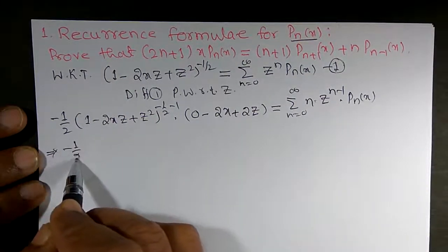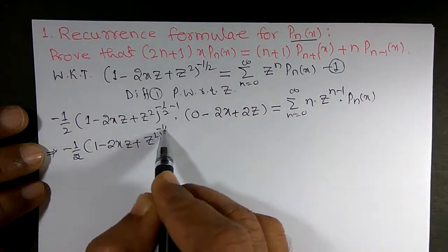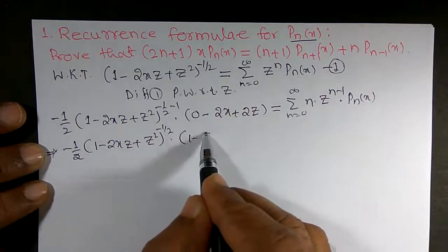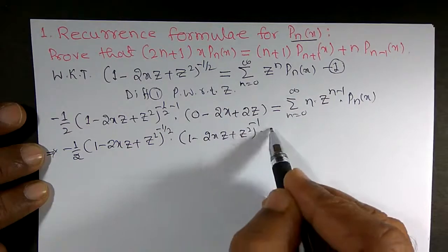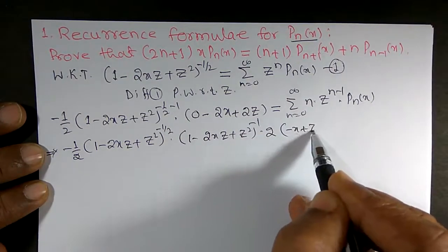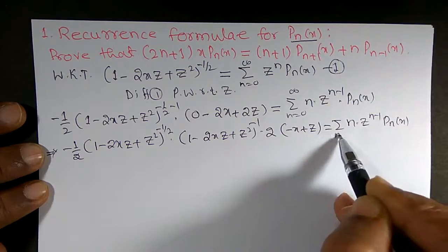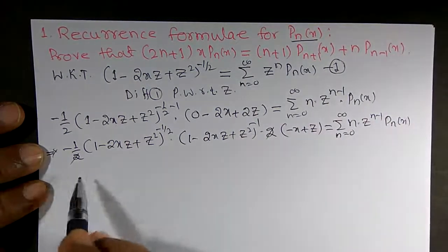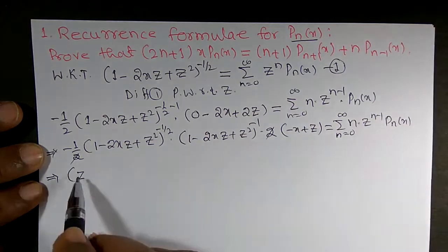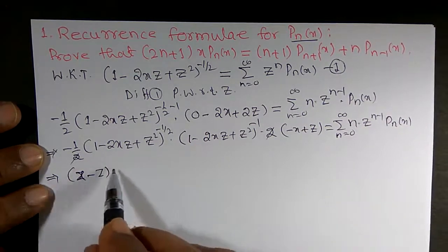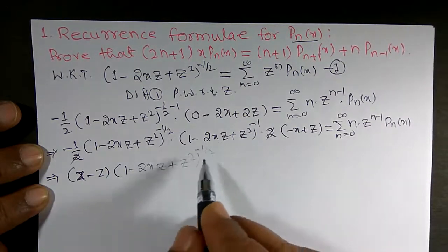This implies: (−1/2)·(1 − 2xz + z²)^(−3/2)·2·(−x + z) equals the summation of n·z^(n−1)·Pₙ(x). The 2 cancels, and multiplying the negatives gives us: (x − z)·(1 − 2xz + z²)^(−3/2) equals the summation of n·z^(n−1)·Pₙ(x).